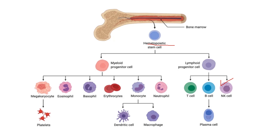The mature NK cells then circulate in the bloodstream and are also found in various tissues, for example blood, bone marrow, liver, spleen, lymph nodes, lung tissue, and intestinal mucosa throughout the body. They are ready to respond to potential targets like infected cells, abnormal cells, and cancerous cells.